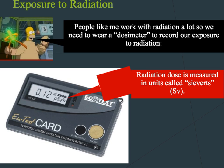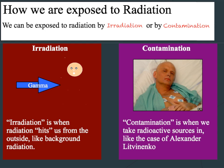There are two ways in which we can be exposed to radiation: irradiation or contamination. Irradiation is when radiation hits us from the outside, like background radiation. We are exposed to large amounts of irradiation on a daily basis.